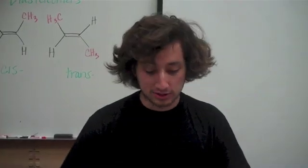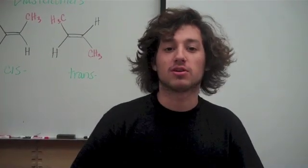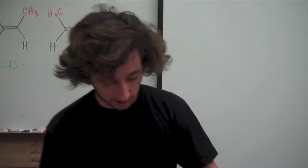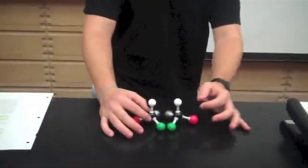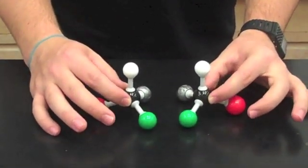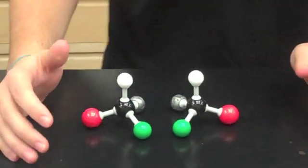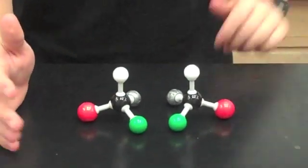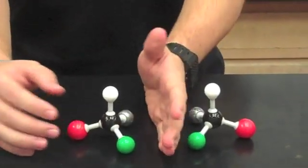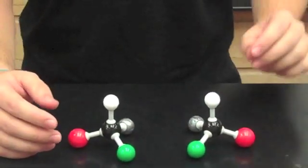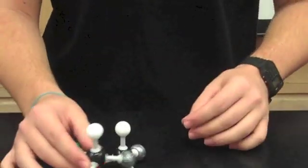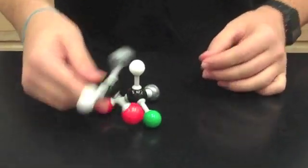Now we're going to explain enantiomers. Enantiomers are two molecules that would be mirror images of each other. In this example, we've got a modeling kit. The central atom, this black one, is a carbon, and the four different colors around it represent various atoms. These two are mirror images — if you put a mirror right between them, you would see the opposite. Now, if you were going to try and superimpose one on the other, no matter which way you twist and turn, they would not be the same.